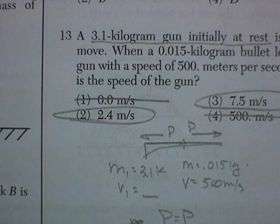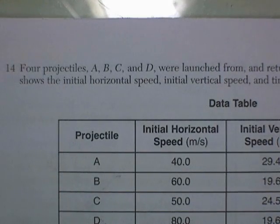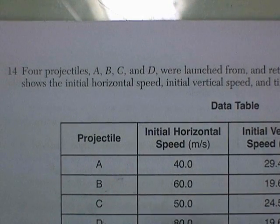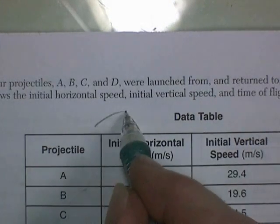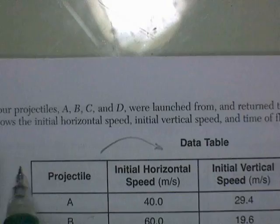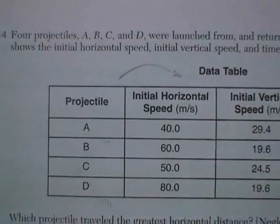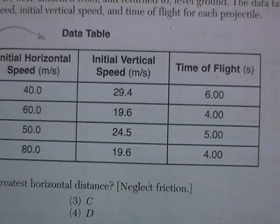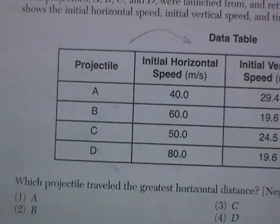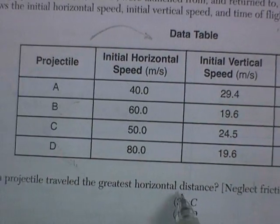This is the page. I think I've got time to do page 4. Only three questions. Four projectiles, A, B, C, and D, are launched horizontally, and then they return to the ground. That's what the data table shows us. Projectiles A, B, horizontal speed, vertical speed, and time of flight. Which projectile traveled the greatest horizontal distance?